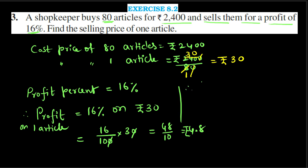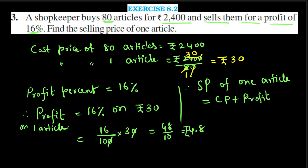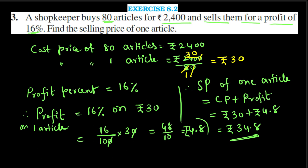Therefore, selling price of one article equals cost price plus profit, that is Rs. 30 plus Rs. 4.8, which equals Rs. 34.8. This is the final answer.